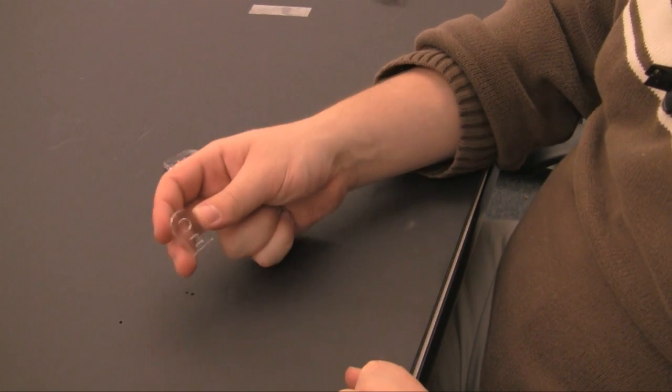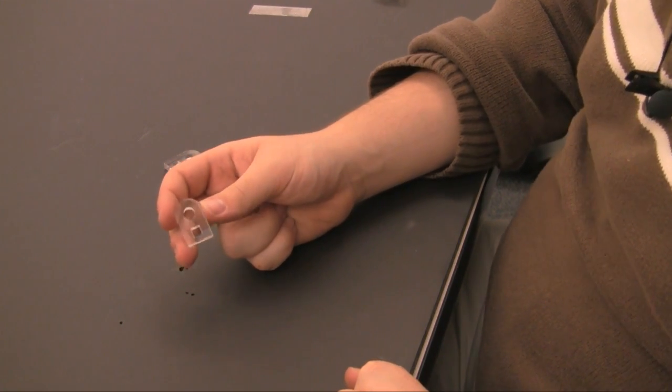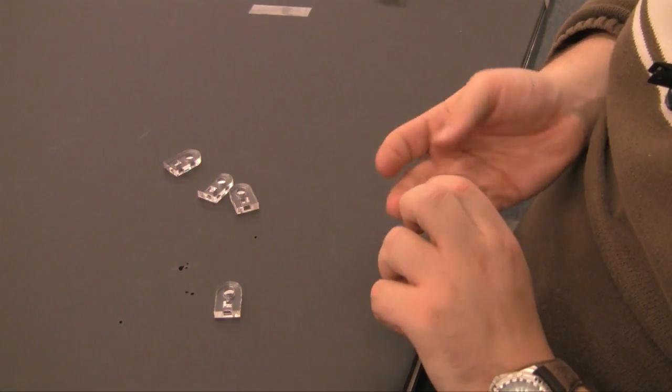The y and z-axis tensioner side plates are symmetric and therefore the inserts can be placed from either side.